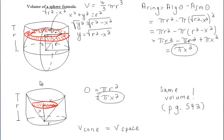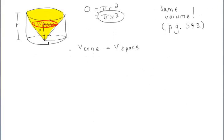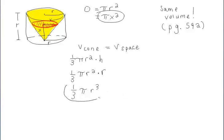So the ring and the circle within the cone have the same area, meaning the volume of the surrounding space equals the volume of the cone. We know from a previous video how to find the volume of a cone: one-third times the area of the base times the height, which is (1/3)πr² × r. Since the radius of the cone is also r, the volume of the cone is (1/3)πr³. Therefore, (1/3)πr³ is also the volume of the space surrounding the hemisphere.